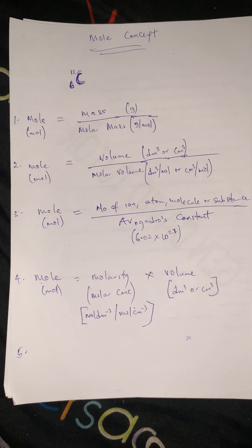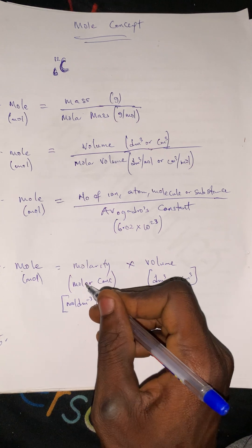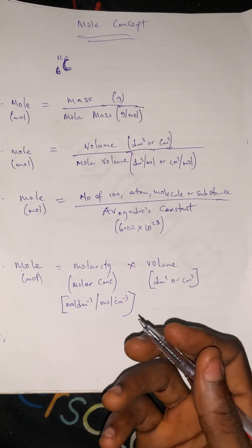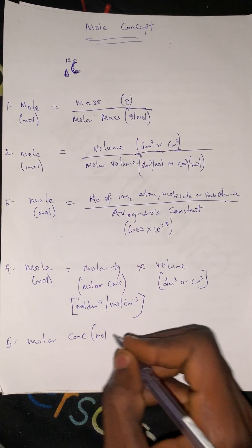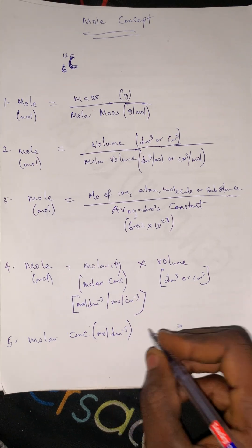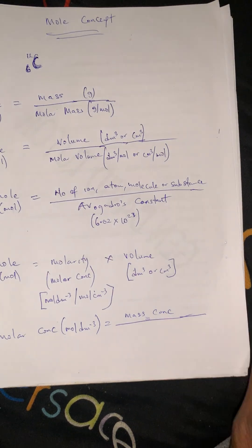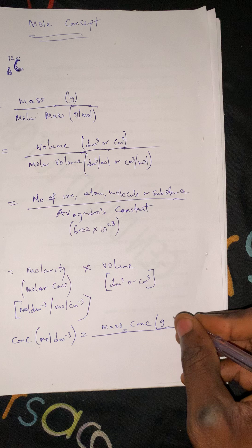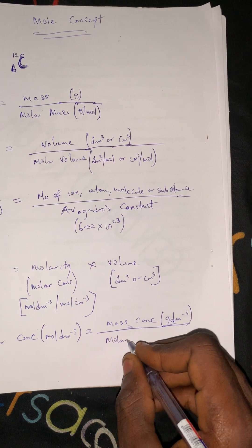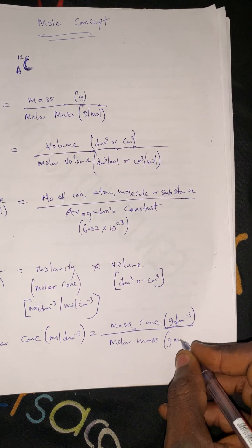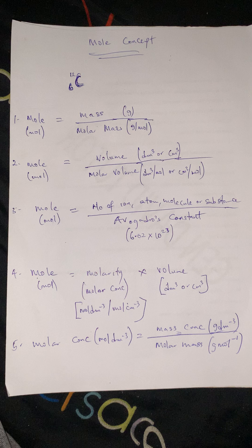Number 5: the molar concentration in moles per dm³ equals mass concentration over molar mass. The unit for the mass concentration is grams per dm³ over molar mass in grams per mole.